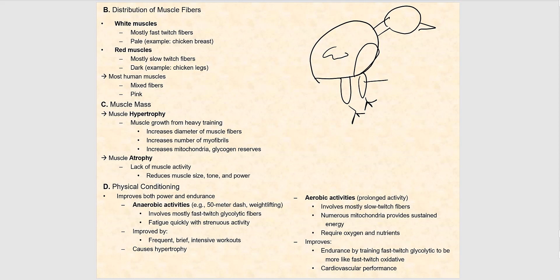Hypertrophy means an increase in the size of the muscle. This happens with heavy training or weight-bearing exercise. When you lift weights, you increase the number of myofibrils, the number of mitochondria, glycogen reserves, and the diameter of the muscle cells. As the number of myofibrils increases, the diameter of the cell increases, which eventually leads to an increase in the overall muscle size.